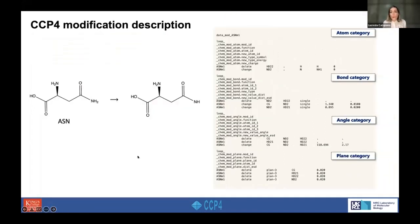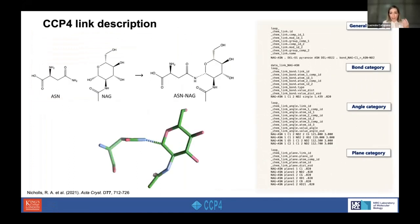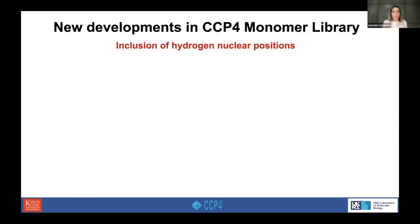Here is an example of a modification on amino acids in order to create a link. Two monomers are modified in order to be linked, and the link description contains all the relevant categories to describe the link.